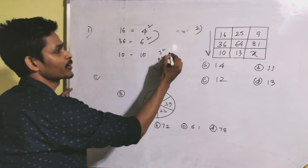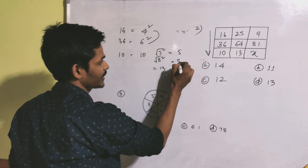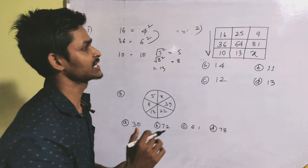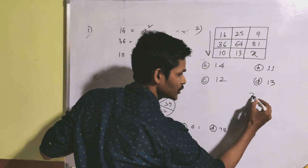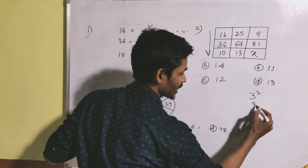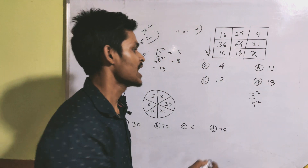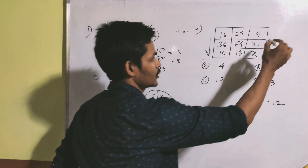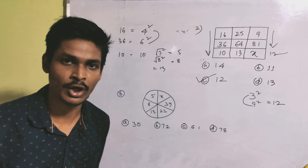Next: 25 is 5 squared, 64 is 8 squared. Following this squares pattern, 8 and 5 relate to give 15. From 9, which is 3 squared, and 81 is 9 squared. We have the answer as 12, and the option is C.